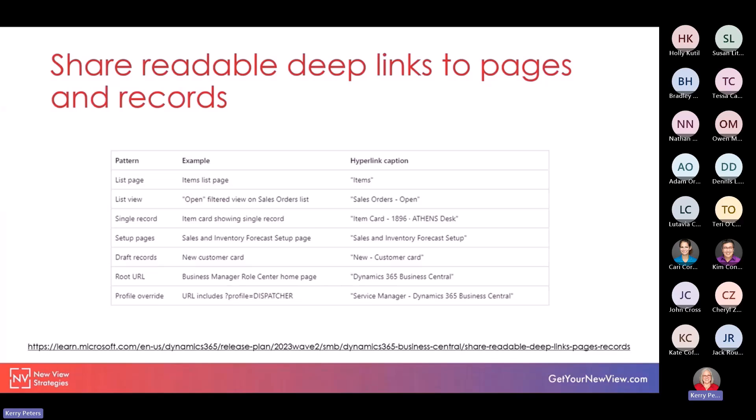For example, if you are on an open filtered view on your sales order list, the hyperlink caption that you see when you paste that link is going to be 'Sales Orders - Open.' These are improvements to the usability of sharing information, and for users receiving the links, it's easier for them to know exactly what they're looking at.